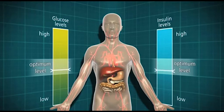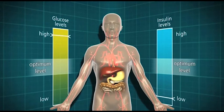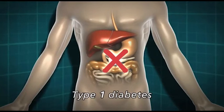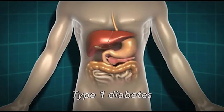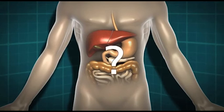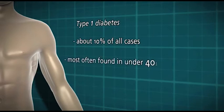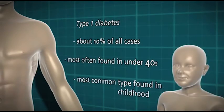However, in some people the system doesn't work properly and they develop diabetes. There are two main types of diabetes: type 1 and type 2. In type 1 diabetes the body isn't making any insulin at all, because of an autoimmune response whereby the body has destroyed the insulin-producing cells in the pancreas. We don't entirely know why that happens in some people and not in others. Type 1 diabetes accounts for about 10% of all cases and is most often found in the under-40s — it's by far the most common type found in childhood.